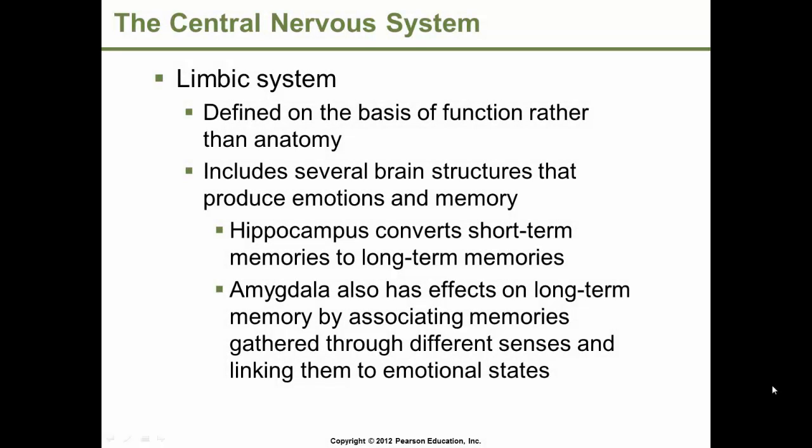The limbic system is a term for a group of structures that help to produce emotions and memory. The limbic system is defined on the basis of function rather than anatomy, so it includes several brain structures that produce emotions and memory.